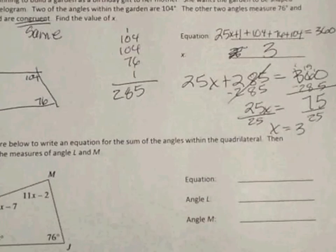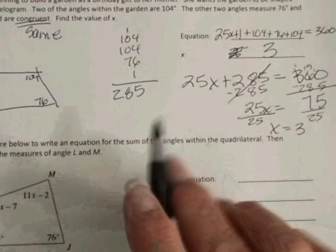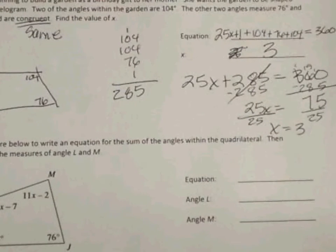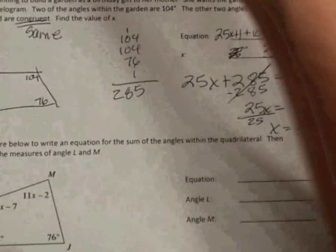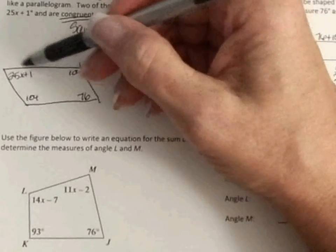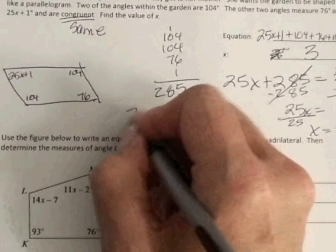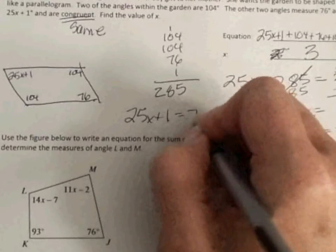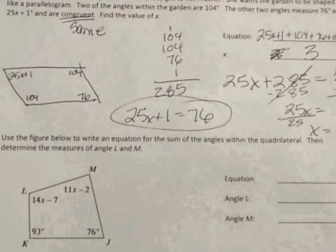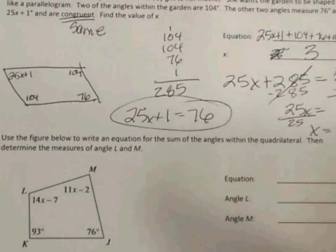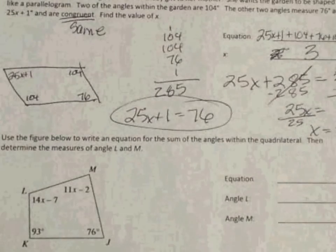Now I can write that there. And what was it asking? It was asking for the value of x. There is another way you could have solved this as well. We know that 25x plus 1 and 76 are equal. So you could have gone there and just solved that equation as well. You can go ahead and solve it on your own and see that you get the same value for x.